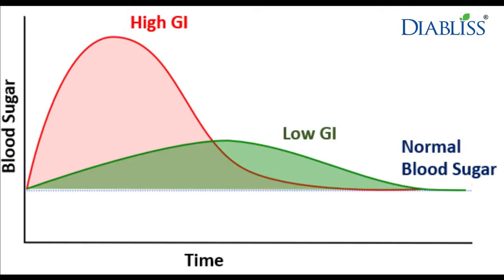Foods with a GI ranking of less than 55 are called low GI foods. Those with a GI between 55 and 70 are called medium or intermediate GI foods. And those over a GI of 70 are called high GI foods.